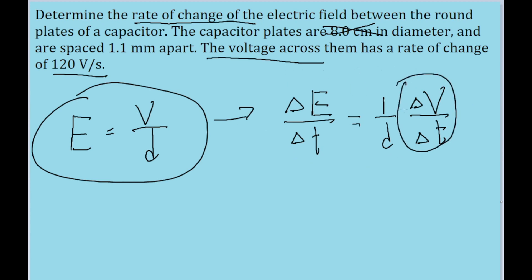Let's put this into our calculator. The rate of change of E, delta E over delta T, equals 1 divided by the distance between the two plates, which is 1.1 times 10 to the power of negative 3 meters. We multiply this by delta V over delta T, which is given as 120 volts per second.